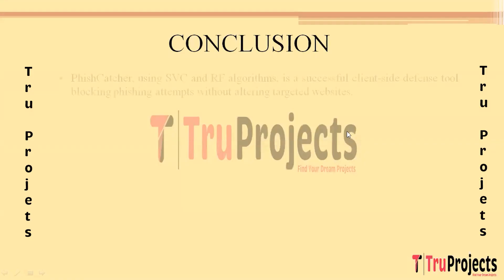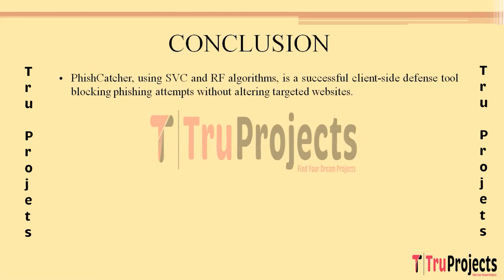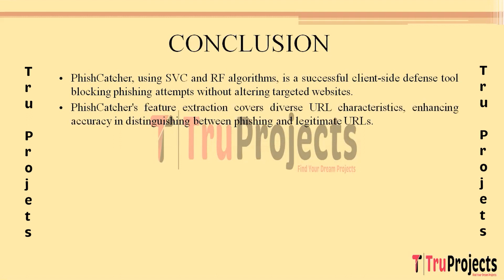In conclusion, the project has successfully developed and implemented Fish Catcher — a client-side defense tool employing Support Vector Classifier and Random Forest algorithms. This robust model effectively identifies and blocks malicious URLs, fortifying users against phishing threats without requiring modifications to targeted websites. Through meticulous feature extraction, Fish Catcher incorporates diverse URL characteristics including address bar attributes, domain-based features, and HTML or JavaScript properties, enhancing the model's ability to discern between phishing and legitimate URLs.